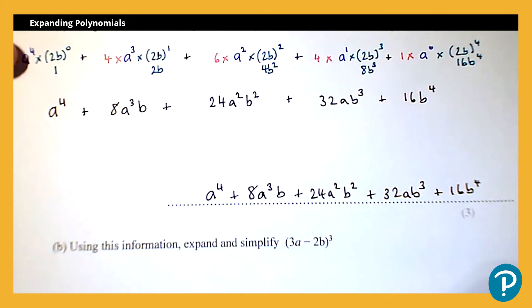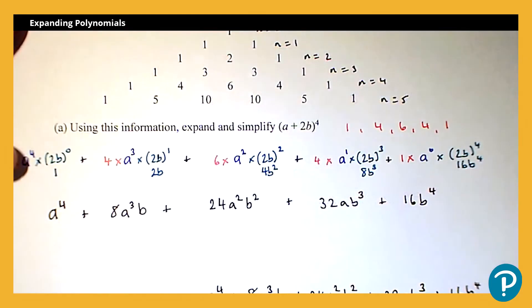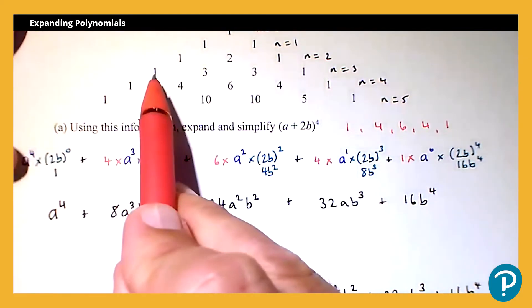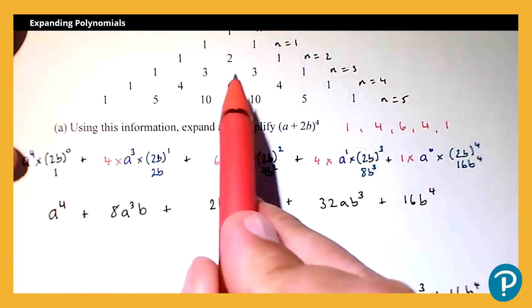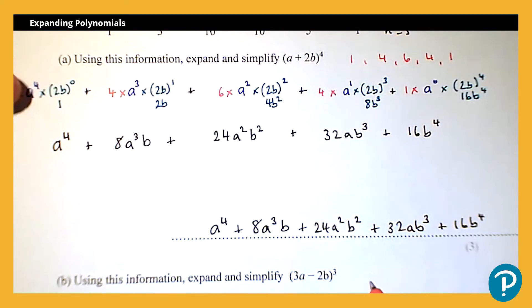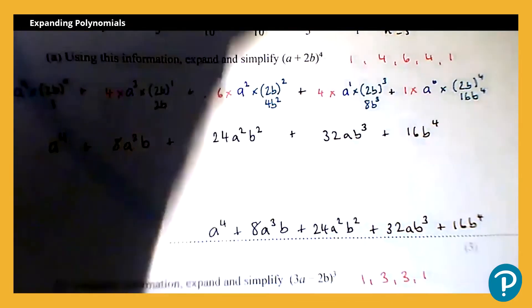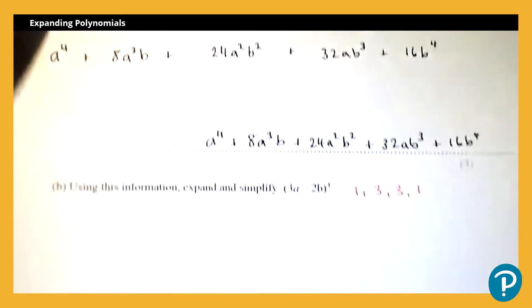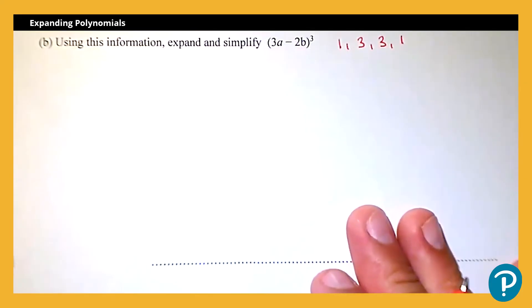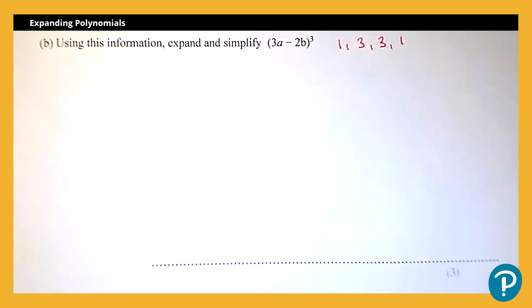For the next question: expand and simplify (3a − 2b) to the power 3. In this case I'm interested in the row 1, 3, 3, 1 from Pascal's triangle. I'll write that down — 1, 3, 3, 1 — and move the triangle sheet up since that's the only information I need from it.